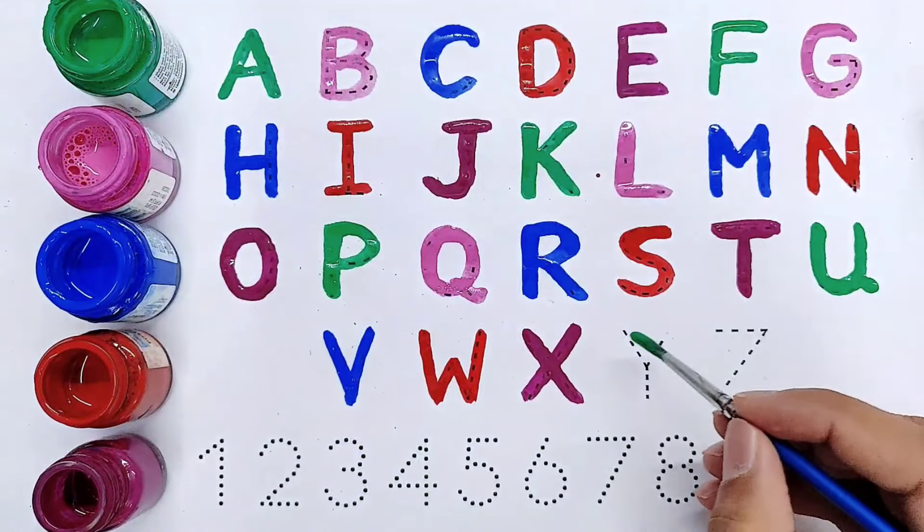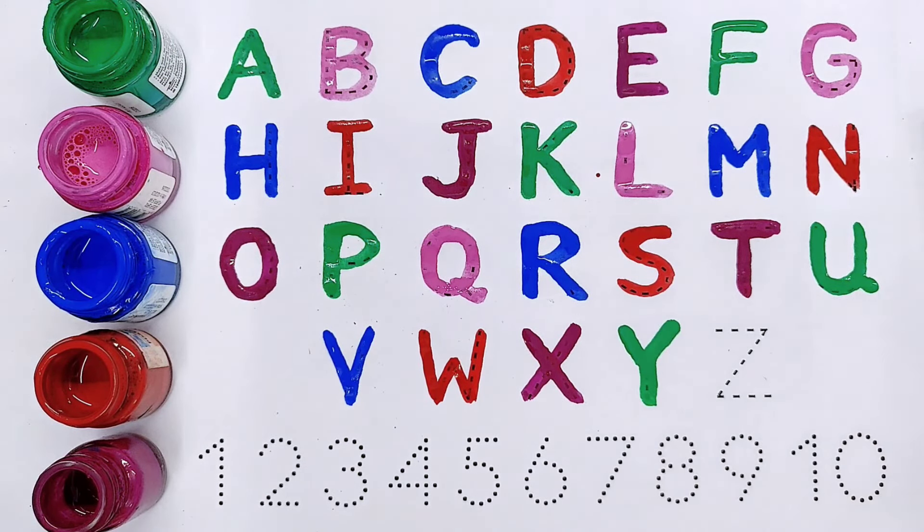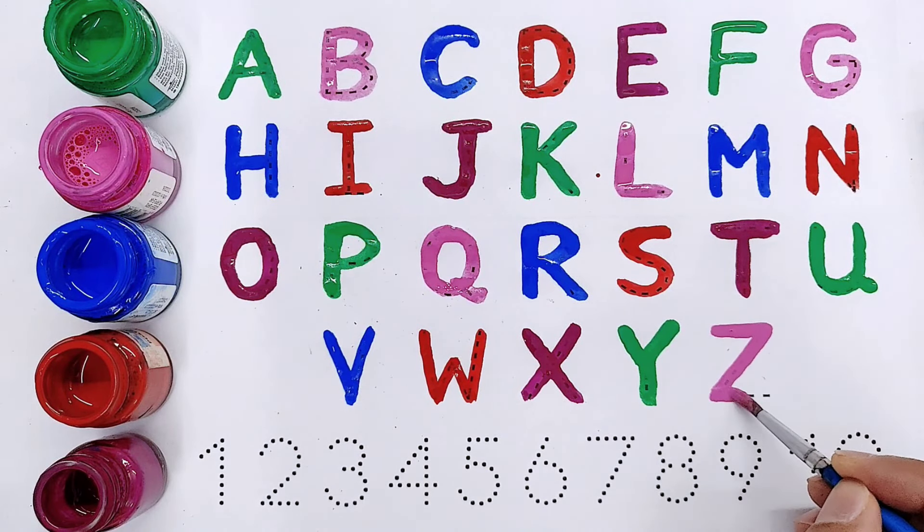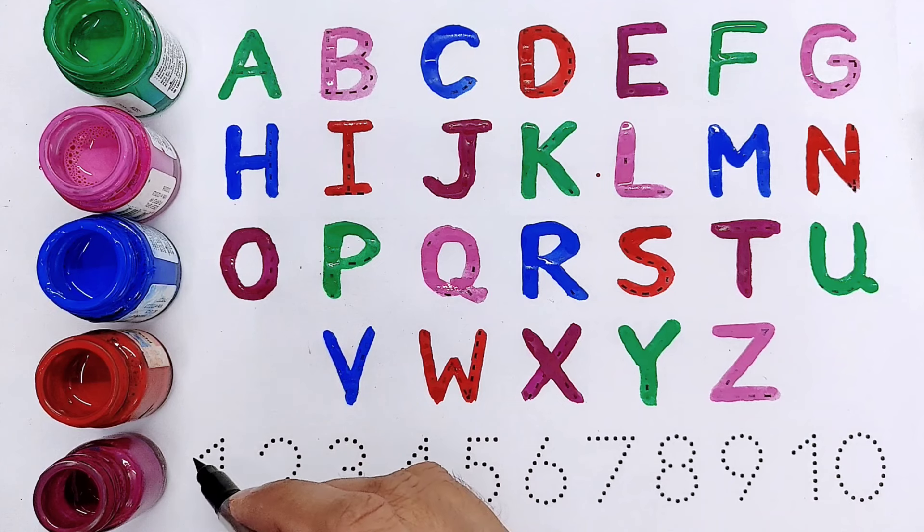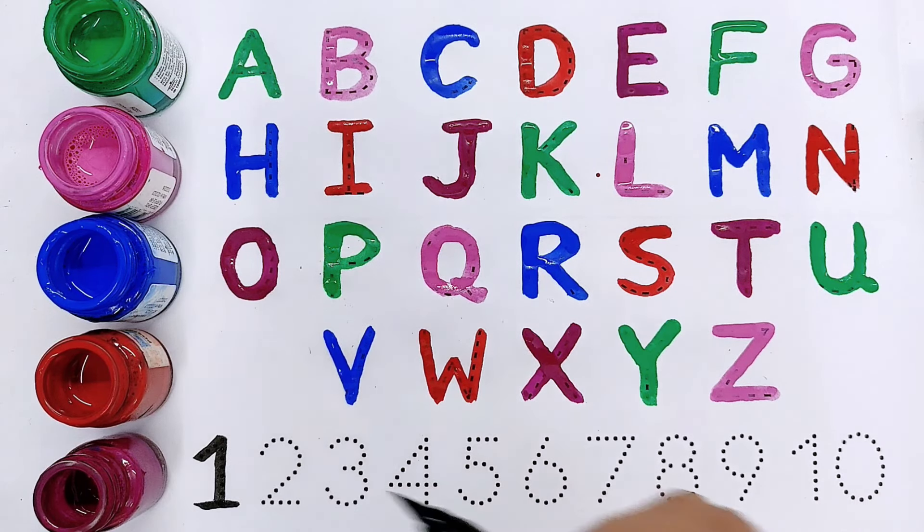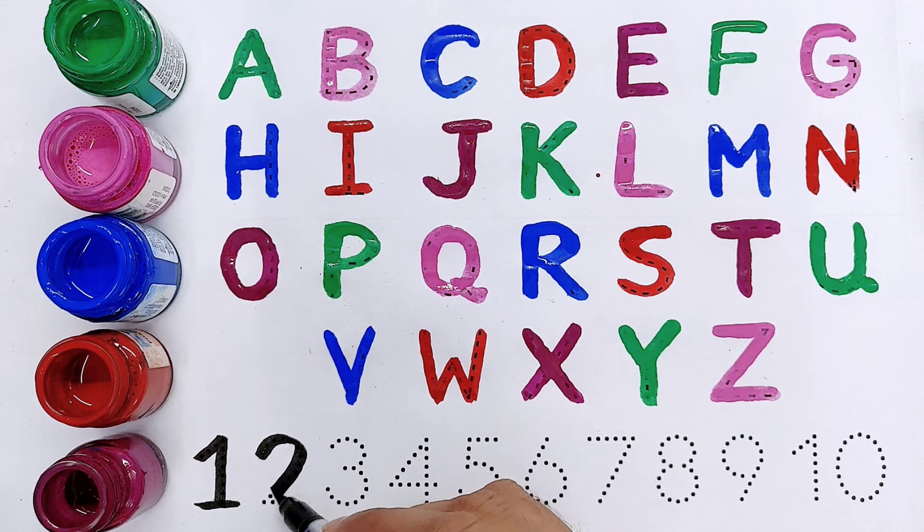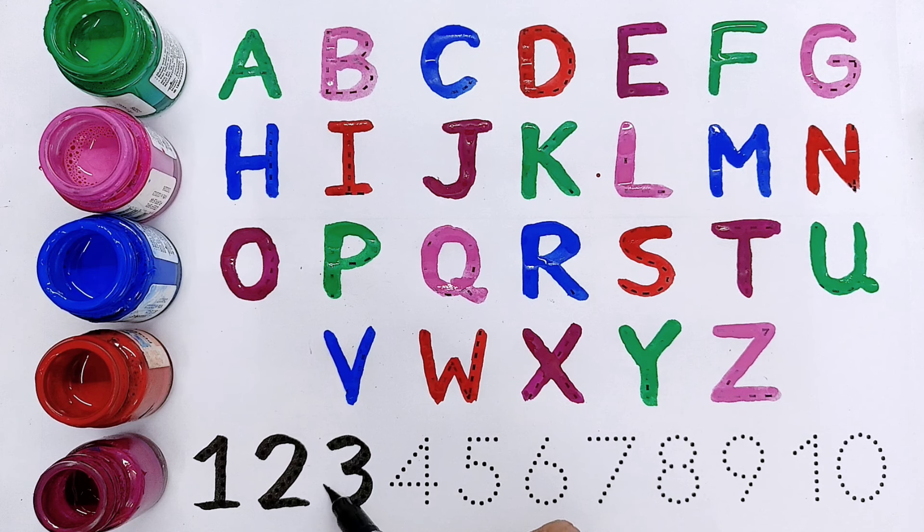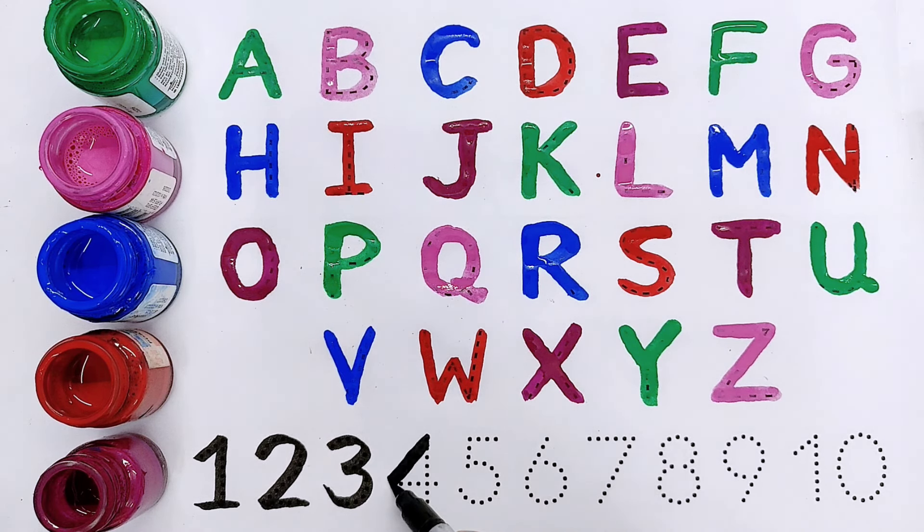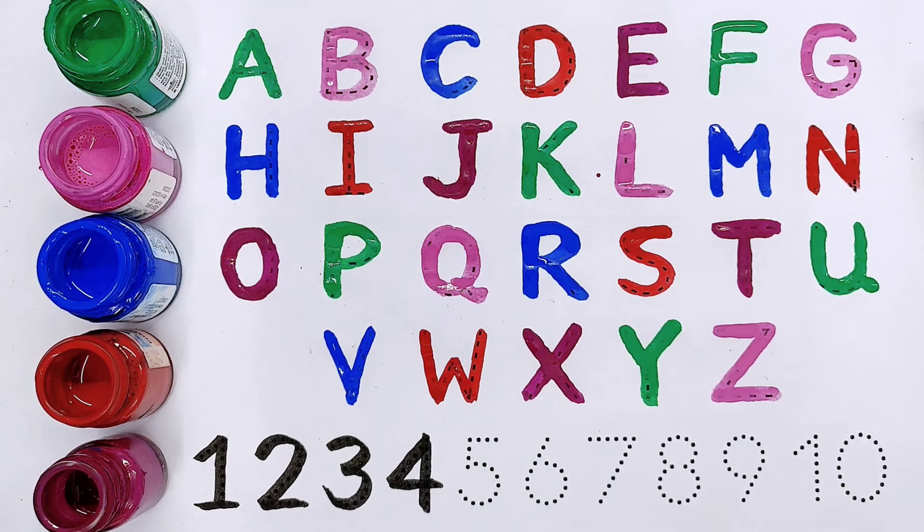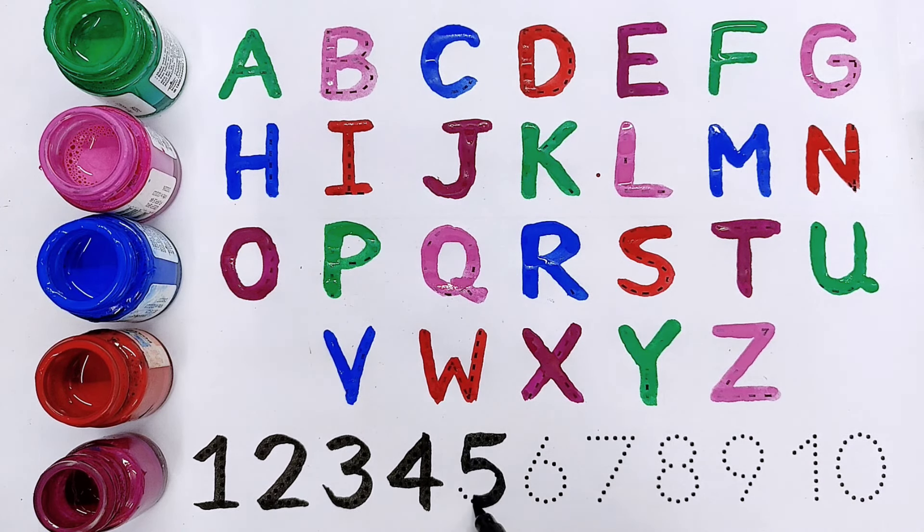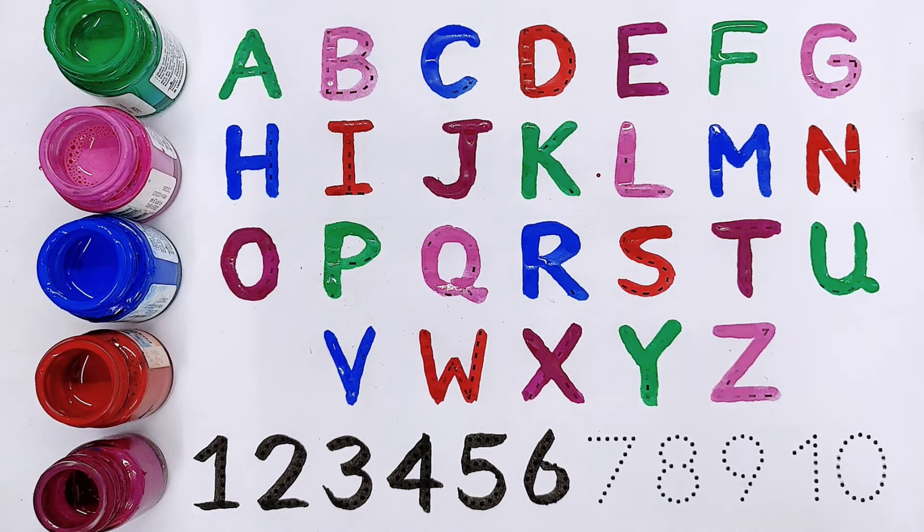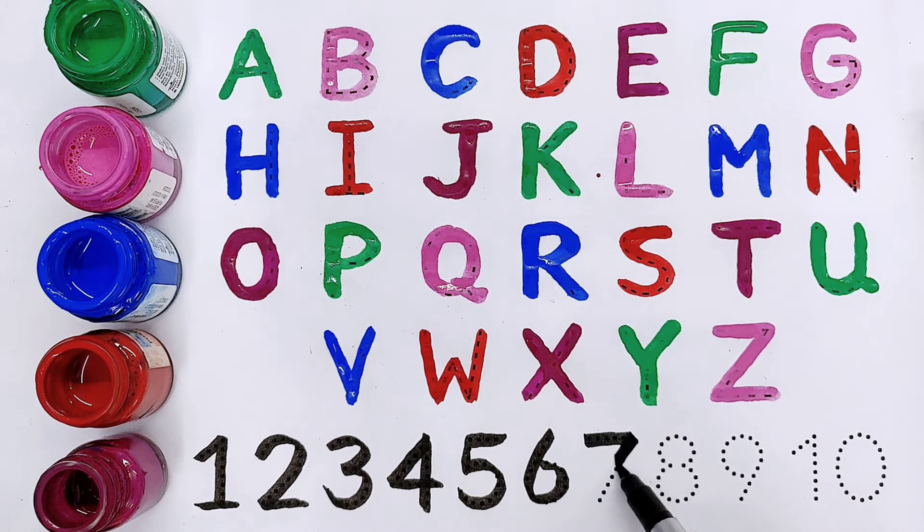Kids let's start count. One, two, it's two. Three, four, it's number four. Five, it's five. Six, seven.